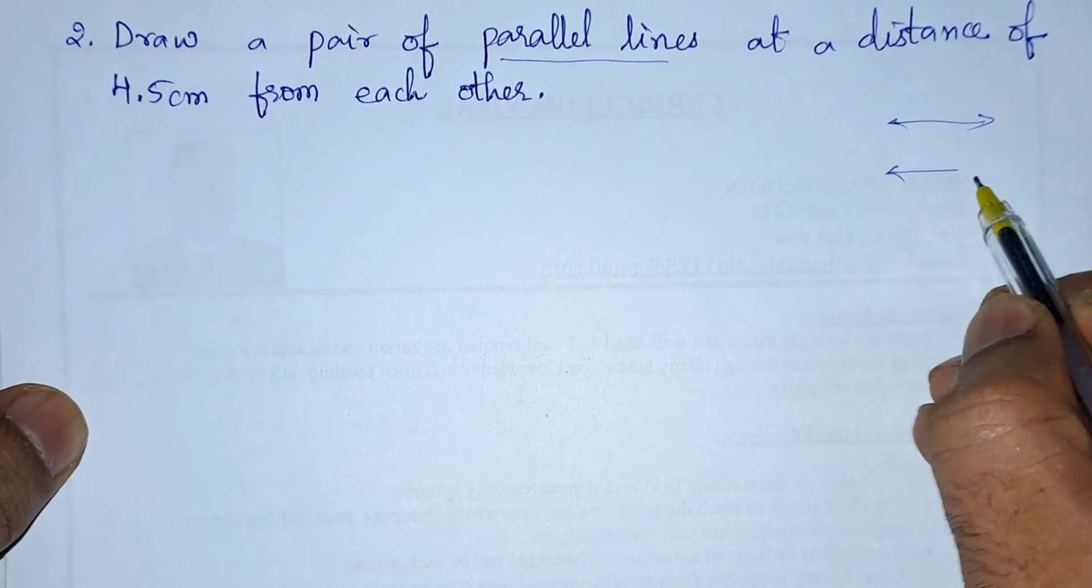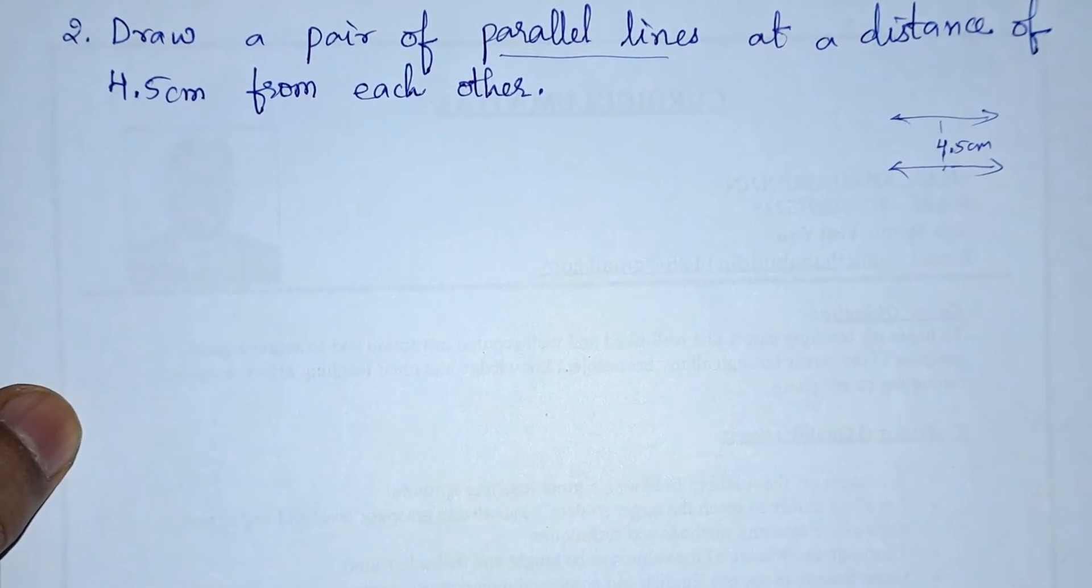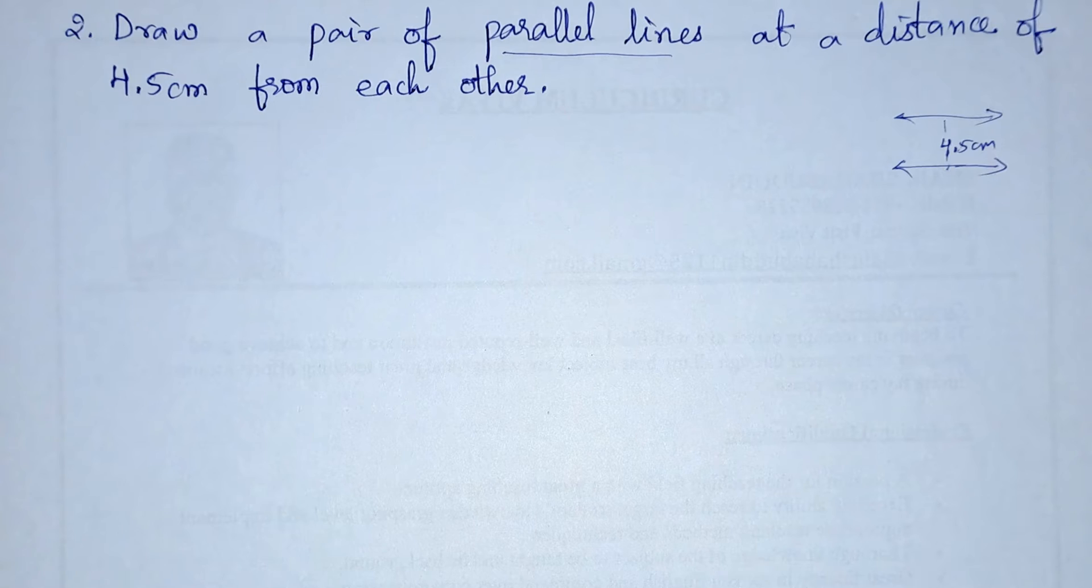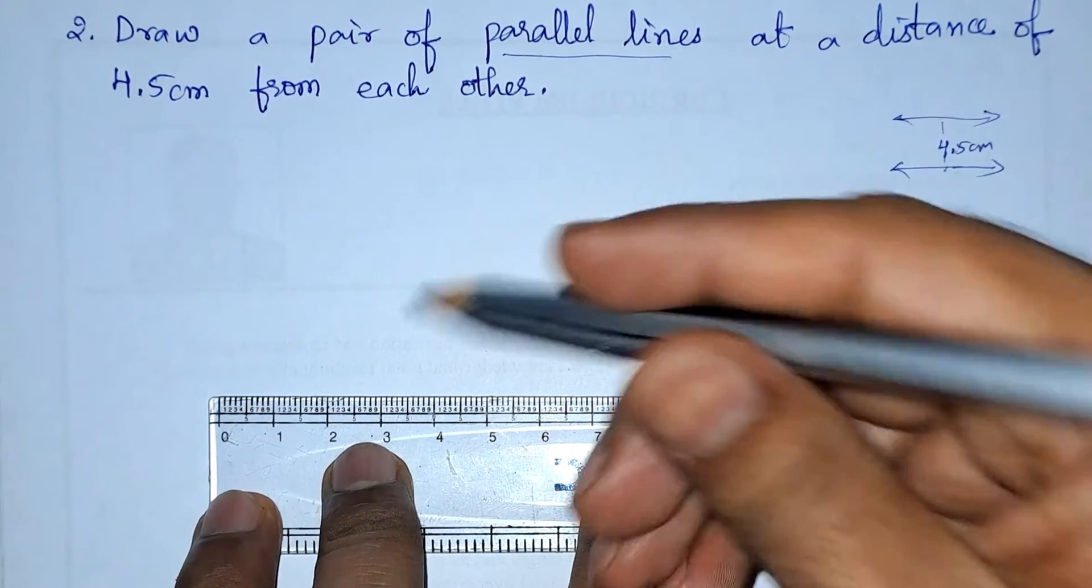If we draw two lines parallel to each other, the distance between them should be 4.5 centimeters. So now let us start drawing. They have not given any measurement for the length of the line, so we will take it as any measurement.